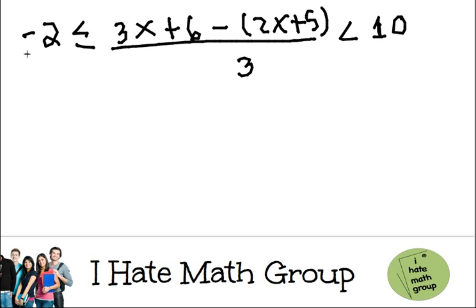Alright, so how do I do this? This is called a compound inequality. The first step is to get rid of the 3. So I'm going to multiply times 3 here, times 3 here, and obviously everything times 3.